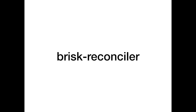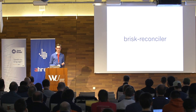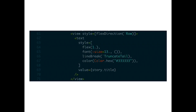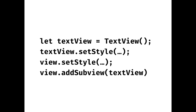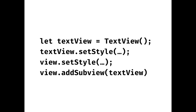Brisk and Reverie have one core, and this core is called Brisk Reconciler. Brisk Reconciler is like a React JS kind of thing — you get JSX that describes the UI, and it produces imperative calls. So you have a text view, you set its style, you add a sub-view to the view — a view and a text as a sub-view — and it translates that into imperative calls.